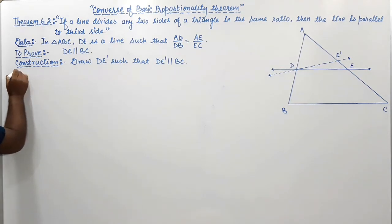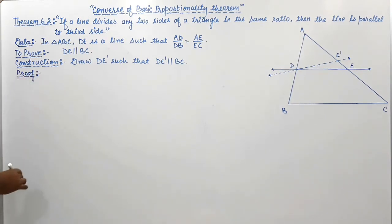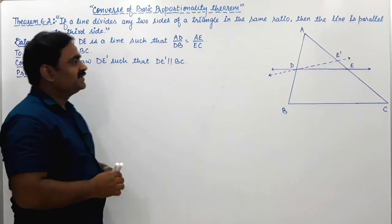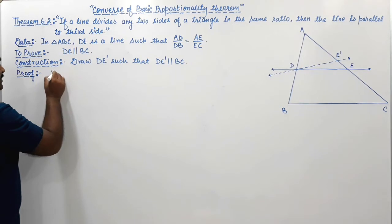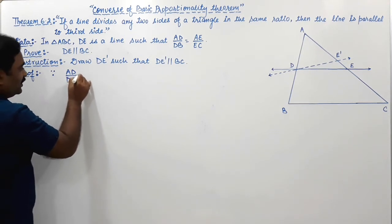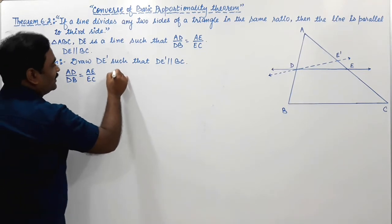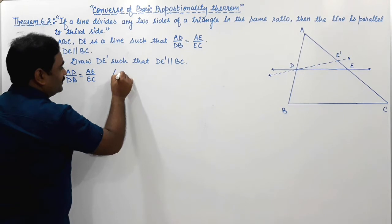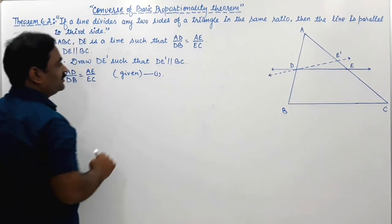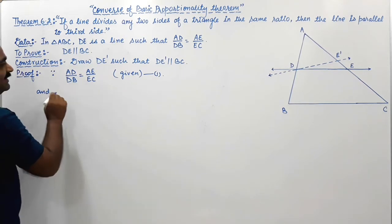So see the proof of this theorem. To prove it, first of all write down what is given. Since AD upon DB equals AE upon EC — write the reason: this is given. Call it equation number 1.